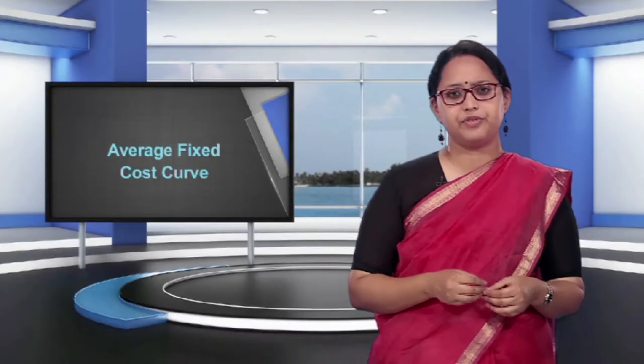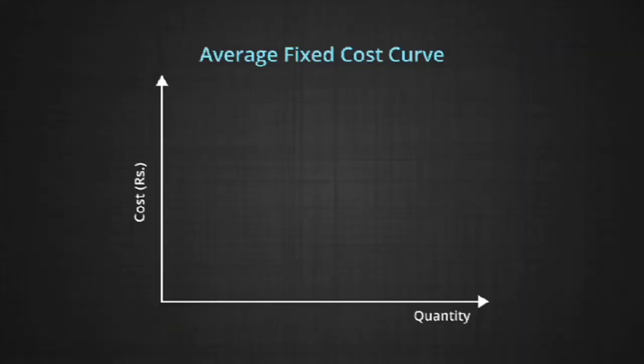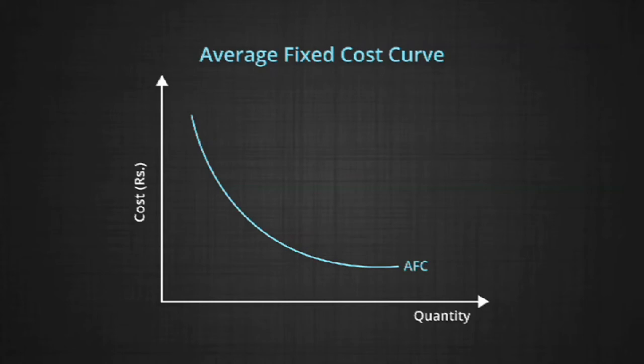The average fixed cost curve: the AFC is a downward sloping curve. Fixed cost is a set cost that we keep dividing by a larger and larger quantity of output; hence the AFC falls continuously. The AFC curve is a rectangular hyperbola, which means the area below the AFC curve is constant. It is also an asymptotic curve — that is, it can never touch the X axis, since AFC can be low but it can never be zero.